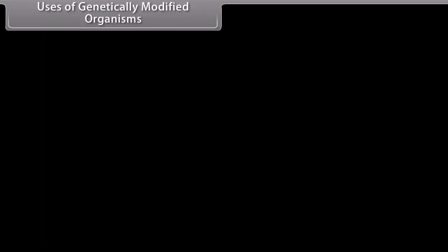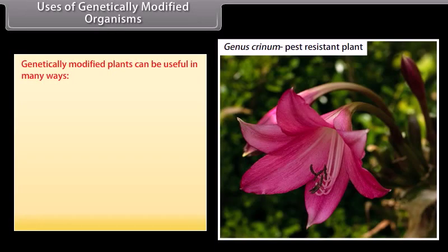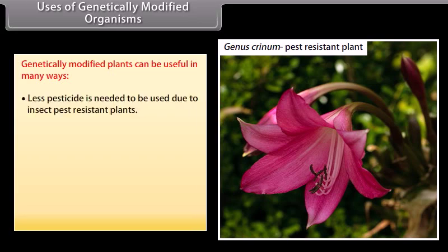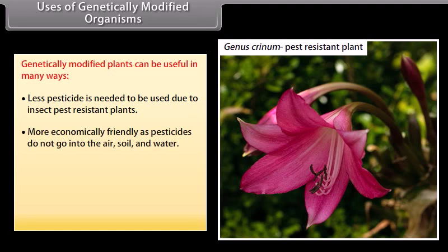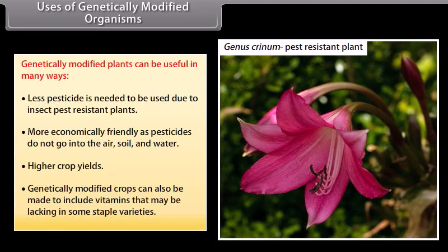Uses of genetically modified organisms: Genetically modified plants can be useful in many ways. Less pesticide is needed due to insect-pest-resistant plants. More environmentally friendly as pesticides do not go into the air, soil, and water. Higher crop yields. Genetically modified crops can also be made to include vitamins that may be lacking in some staple varieties.